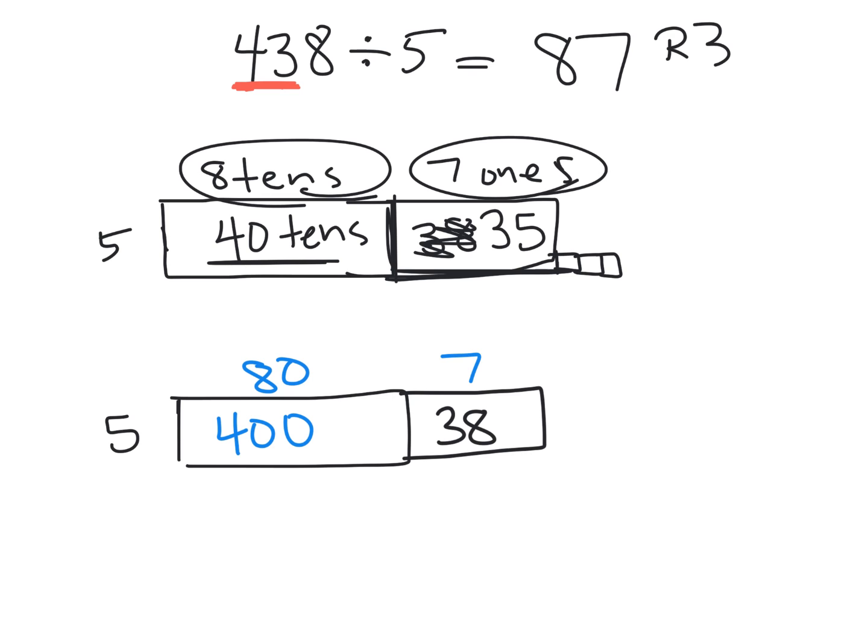And then we know that five times seven is 35. So that actually makes this 35, not 38. And then we have one, two, three little square units left over. So that's another way of showing that the answer is 87 remainder 3. So these are two examples of how we could use the area model to represent division.